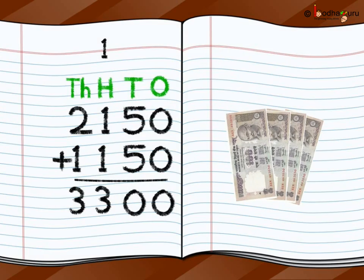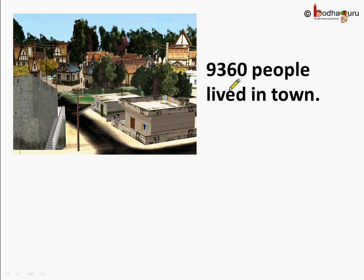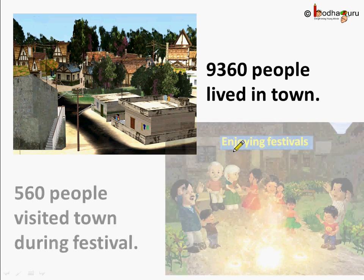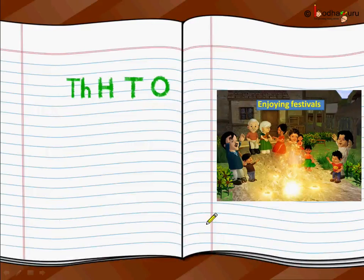Let's take another example. Let's say there are 9360 people who lived in a town. And during festival time, 560 people visited that town to celebrate the festival with their friends and families. So how many people are there in total in the town during the festival time? Let's find out.